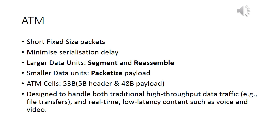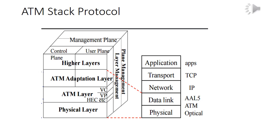ATM was designed to handle both traditional high-throughput data traffic as well as real-time low-latency content like voice and video. Here you can see the ATM protocol stack — the data link layer is equivalent to the ATM layer and the ATM Adaptation Layer. The ATM layer also includes virtual circuits and paths. Separation of control and user planes expedites payload transfer, and user management has an explicit plane.